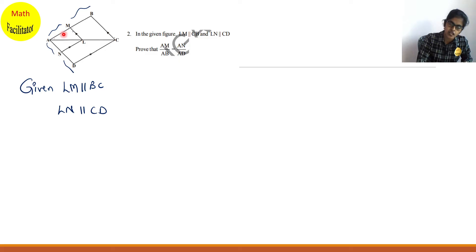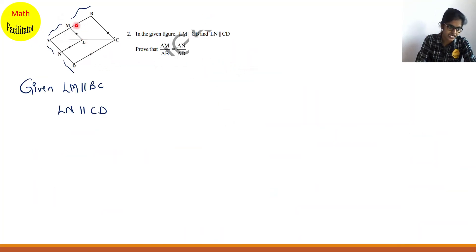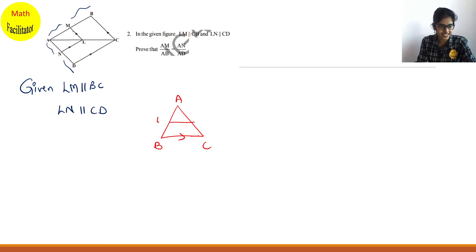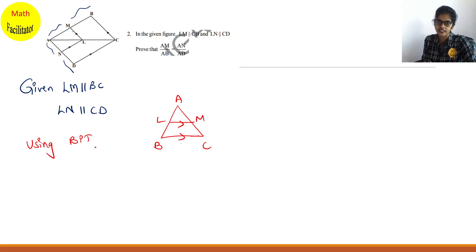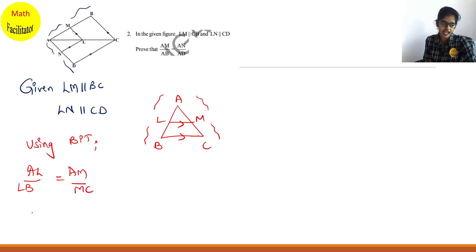Similarly, in the lower triangle ACD, LN is parallel to CD. So I am breaking the figure into two triangles. In triangle ABC, LM is parallel to BC. Using BPT — if a line is parallel to the third side, it divides the other two sides in the same ratio — we get AL/LB = AM/MC. This is equation 1.